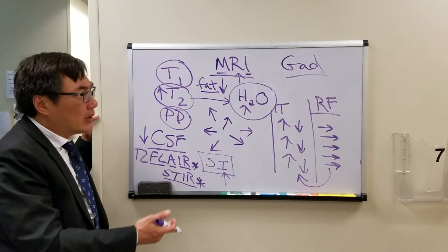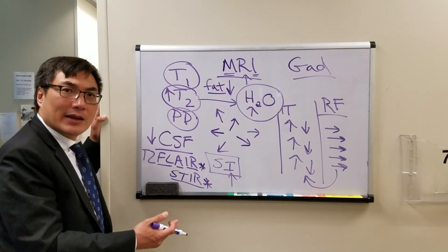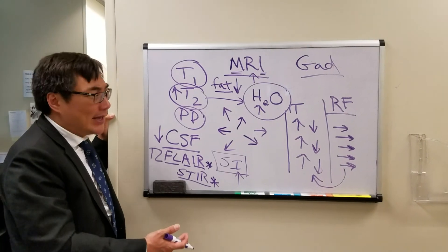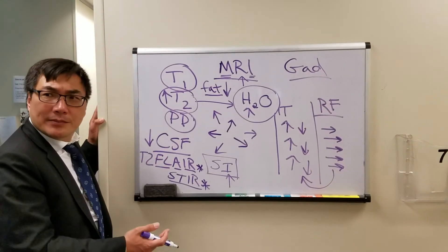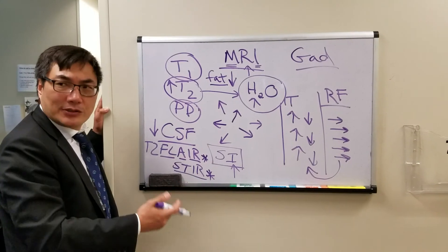So if we see enhancement of the optic nerve after gadolinium, we know that we have pathology there. We know we have breakdown of the blood-brain barrier. And the enhancement that we're looking for is on T1. Gadolinium post-contrast.